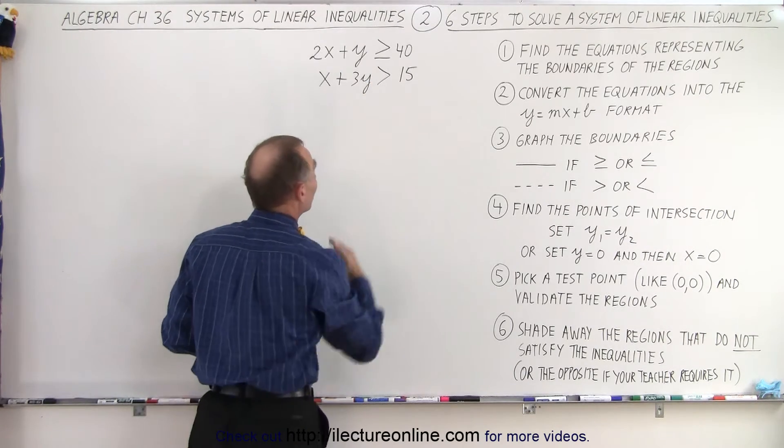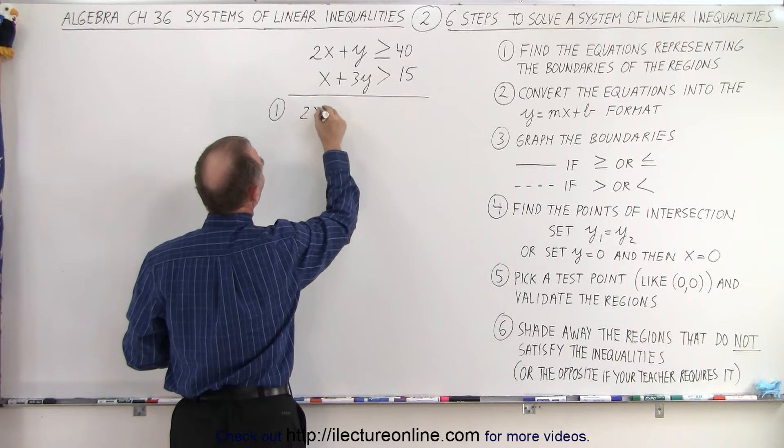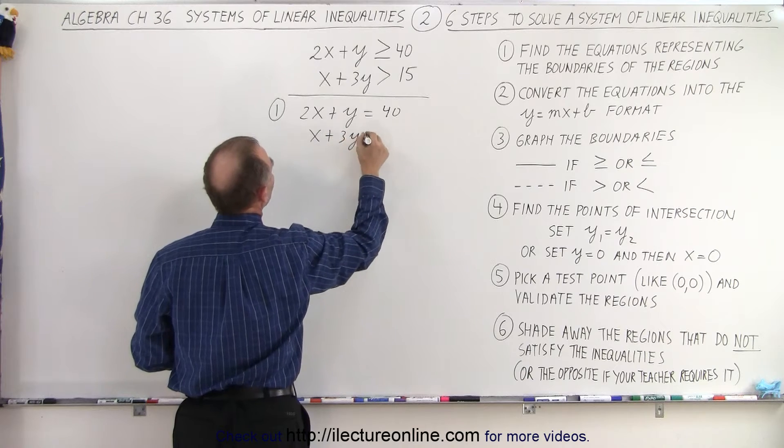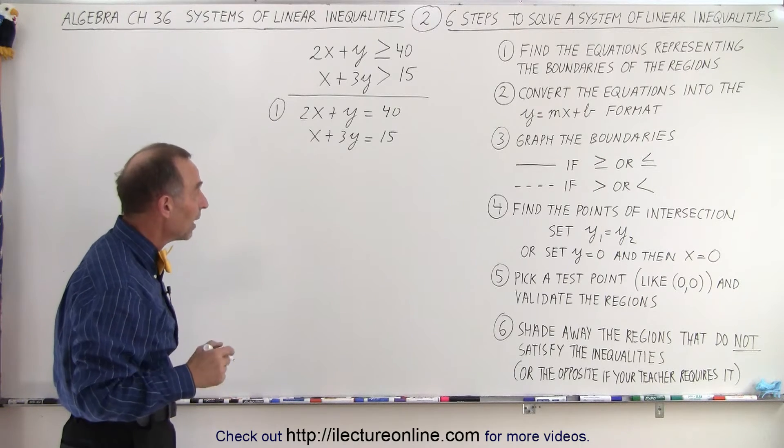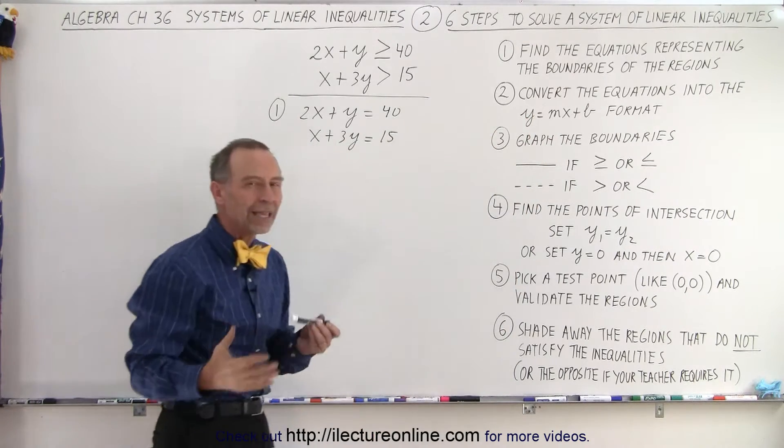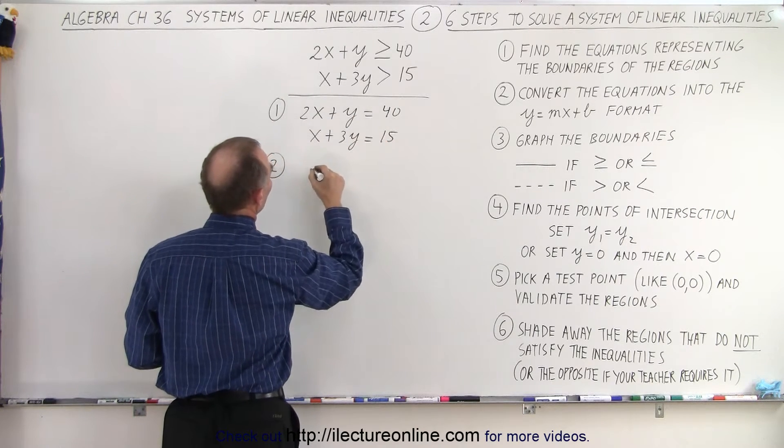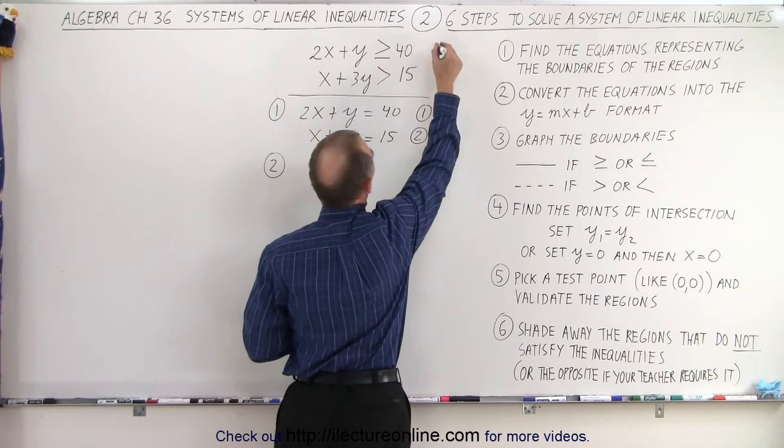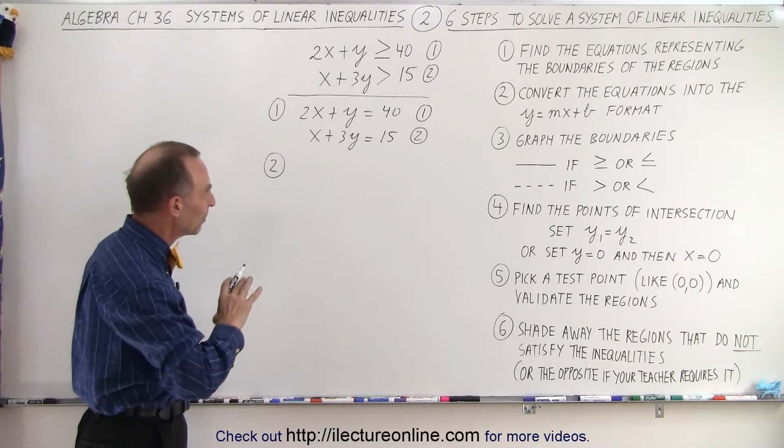equations representing the boundaries of the regions we're looking for and that's the easiest step of them all. All we need to do is take the inequality symbols and simply change them to equal signs. So step number one, we write this as 2x plus y equal to 40 and we write x plus 3y equal to 15. It's as simple as that but it's a necessary step because it allows us to find those boundaries. Now in order for us to graph them, we should do step number two which is write the equations into the y equals mx plus b format. So what we do here is we move the 2x to the other side and also it's not a bad idea to label the equations equation number one, equation number two for inequality number one and inequality number two. So it's not a bad idea to label them all the way through to keep track of them.